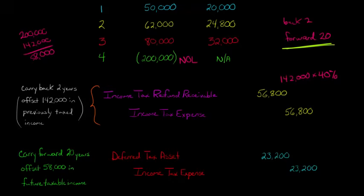It's basically the same idea. You don't know what your profit's going to be in the future, but you know that you can carry forward $58,000 of this $200,000 loss. What we're going to do is say in a future period, we're going to be able to offset $58,000 of future taxable income. We take that $58,000 and multiply it by 40%, the tax rate. That's how much tax you're actually going to save in the future. That's going to be $23,200.